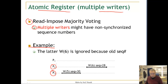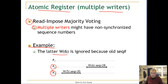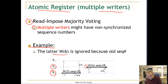P2 performs a write later in time — write 6 is after write 5 — but with sequence number 28. So this later write is ignored, which violates the specification of the atomic register. The broadcast is ignored because it has a lower sequence number, causing write 6 to be ignored.